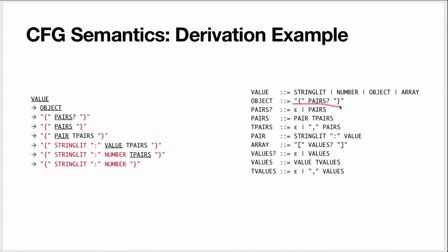Object is just a single non-terminal, so we pick its right-hand side — there's only one. The terminals are highlighted in red, and we still only have one non-terminal. Here we have two possible right-hand sides — we're going to say we want some pairs. A pair is going to be replaced by its production. Then we have a choice again — let's replace 'value'. This time, say we want a number. Finally, we get to the last non-terminal, tPairs, and we replace it by nothing — epsilon — because we don't want more than one pair. So we end up with a string made only of terminals. Mission accomplished.